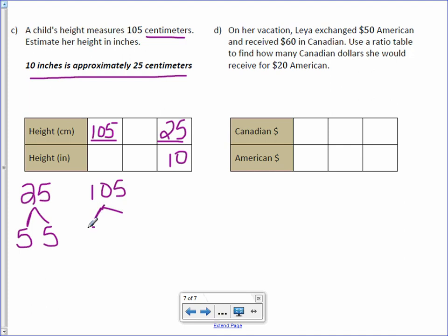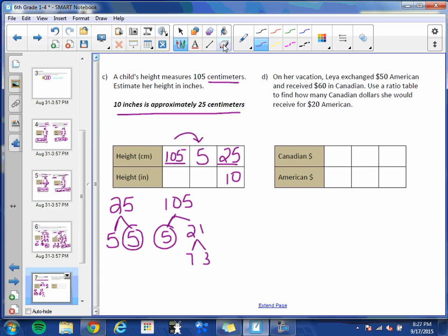So we need to find a greatest common factor between 25 and 105. 25 is 5 times 5. 105... well, I know 5 goes into it. So 105 divided by 5 is 21. And I know I can break down 21 into 7 and 3. My greatest common factor, however, is 5. To get from 105 to 5, we divide... Oops, we have to go the other way. My mistake.